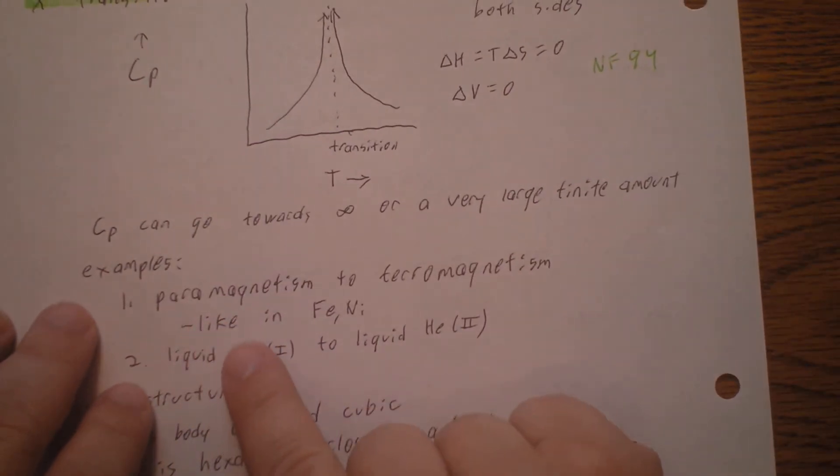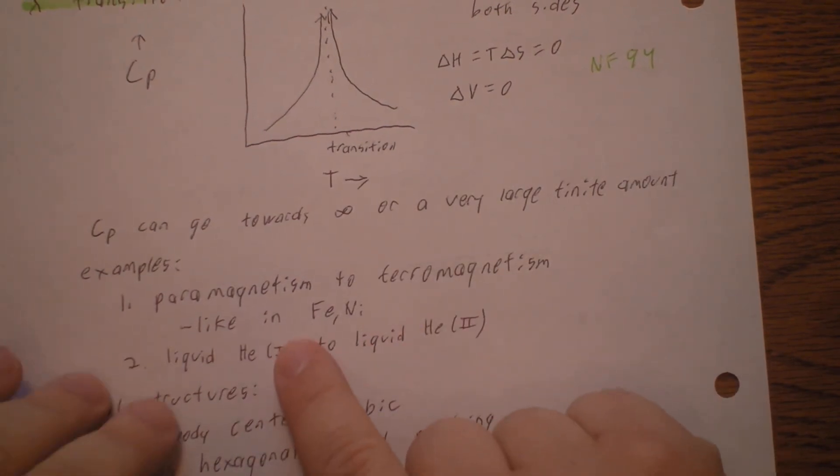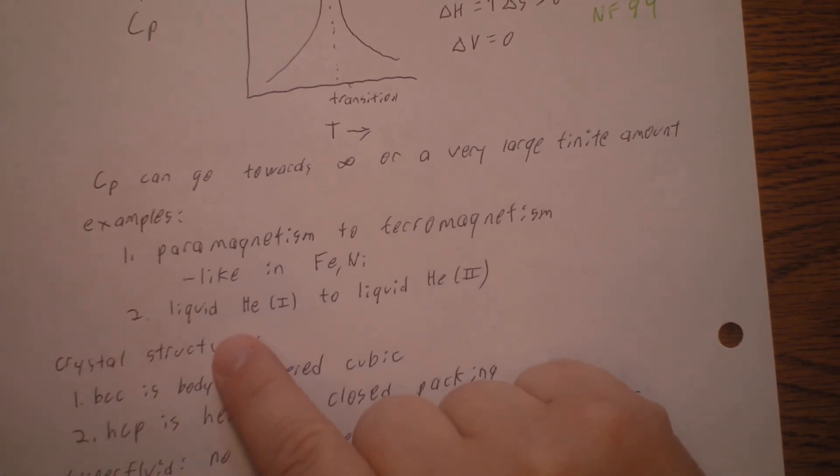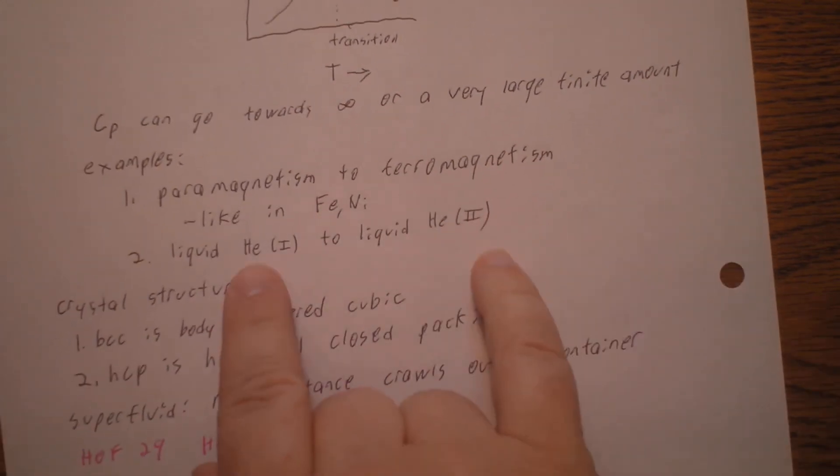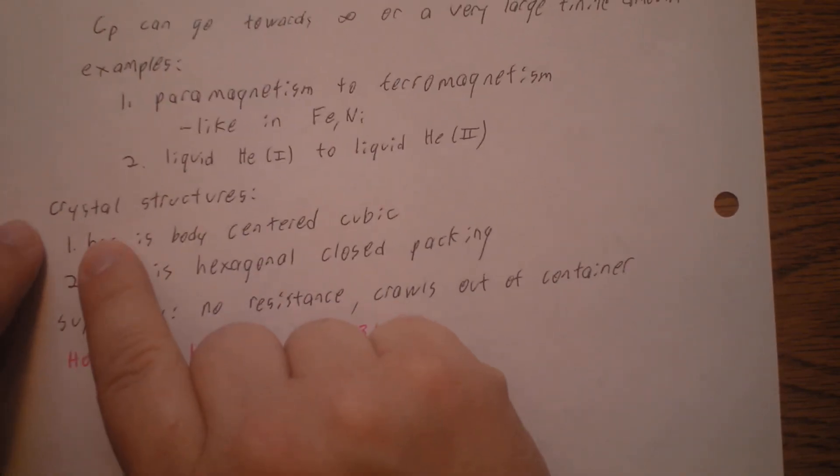Examples of lambda transitions: we go from paramagnetism to ferromagnetism in iron or nickel. Or, helium has different allotropes in its liquid phase. We go from liquid helium-1 to liquid helium-2. That's not the isotope. That's the phase of the liquid.